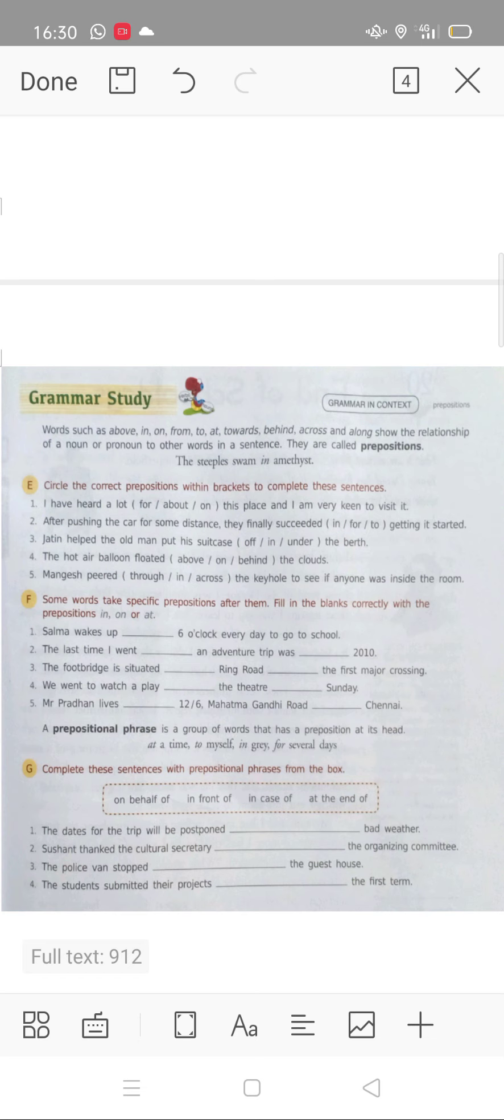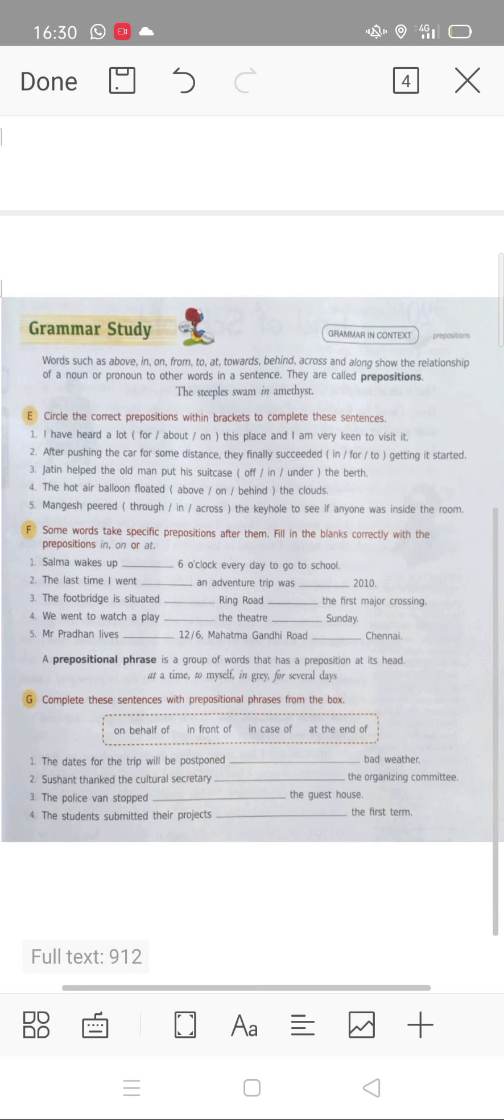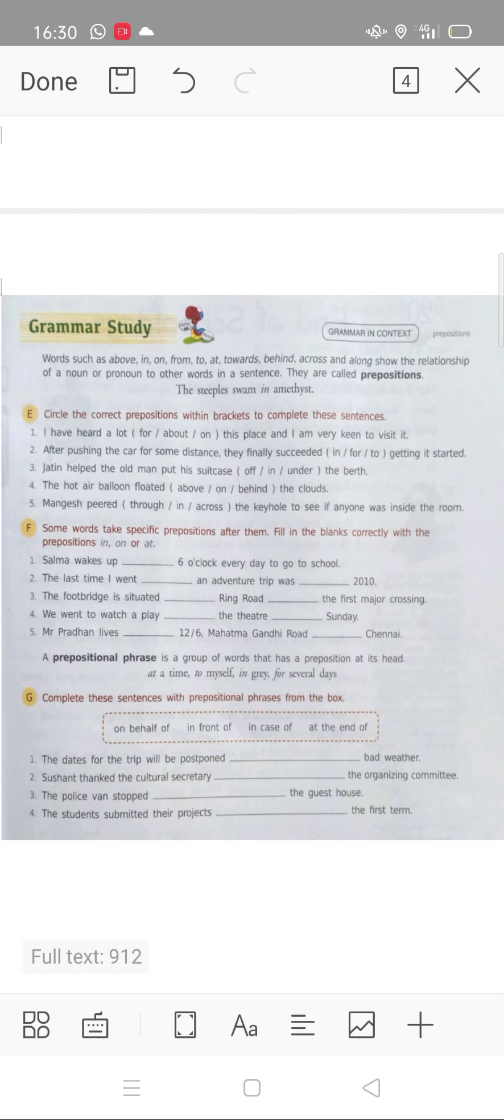For, about, and on, right? 'This place and I am very keen to visit it.' So now, when you read it, you will find which answer it should be: for, about, or on. So whatever correct answer you have, you have to circle.